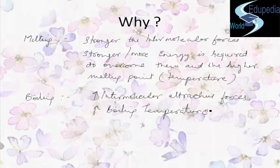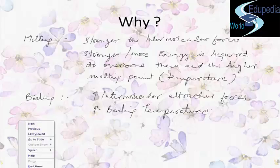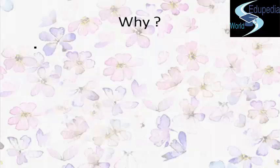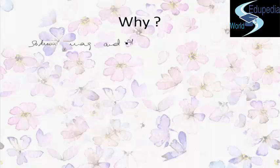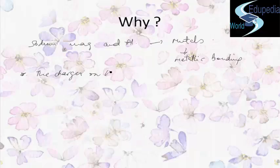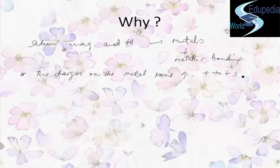Taking the example of sodium, magnesium, and aluminium — they are metals with metallic bonding, in which positive metal ions are attracted to delocalized electrons. Going from sodium to aluminium, the charges on the metal ions increase from +1 to +3, and the number of delocalized electrons also increases.